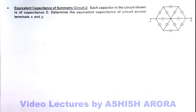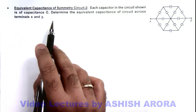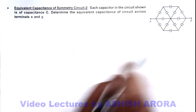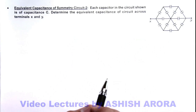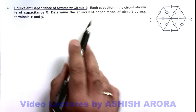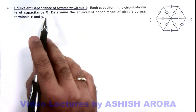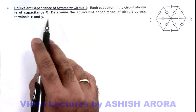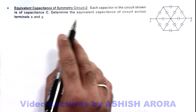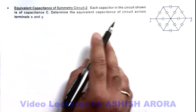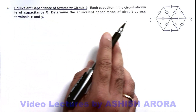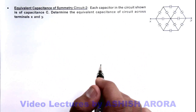In this illustration, we'll further discuss a circuit of equivalent capacitance where the circuit is symmetrical. We are given that each capacitor in the circuit shown is of capacitance C, and we are required to determine the equivalent capacitance of the circuit across terminals X and Y.